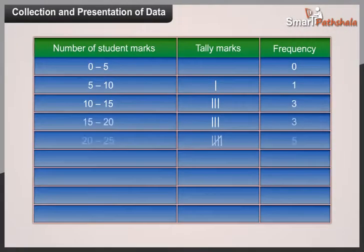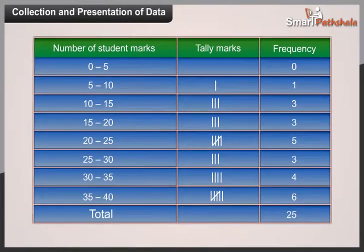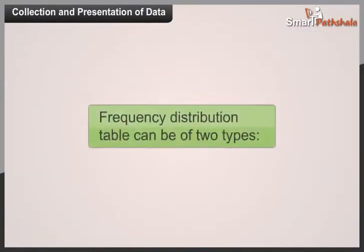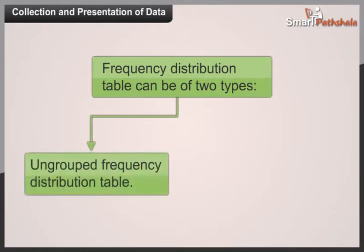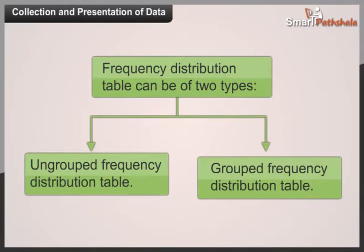After collecting the data, we can put the data in a frequency distribution table, in which the data is arranged as per the number of occurrences of each observation out of the total data. Frequency distribution tables can be of two types: (A) Ungrouped frequency distribution table, and (B) Grouped frequency distribution table.